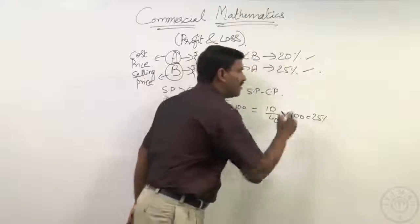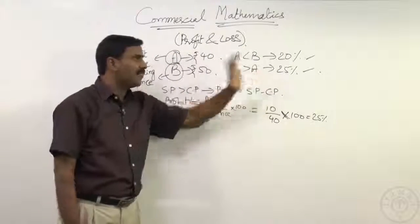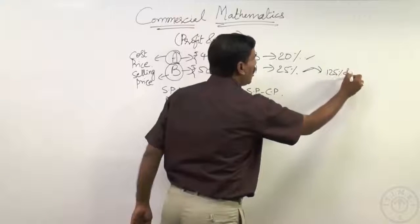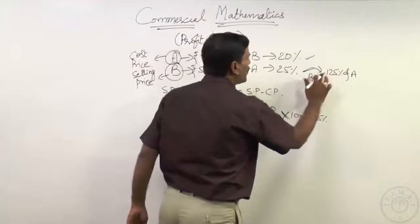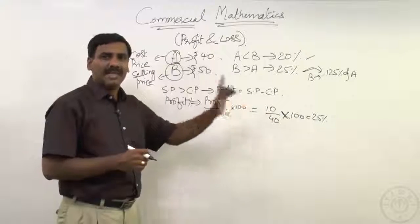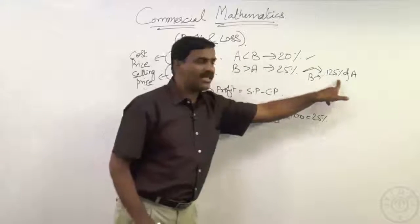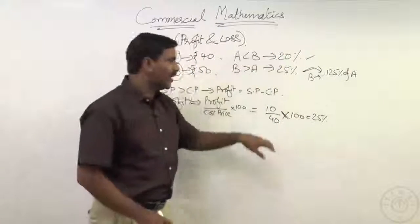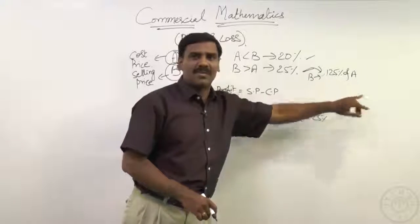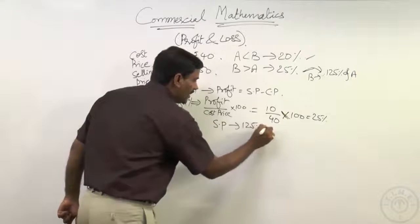So if there is a profit of 25 percentage, selling price is 125 percentage of cost price — just as B is 125 percentage of A from our earlier example. If we replace B with selling price and A with cost price, if there is a profit of 25 percentage, selling price is equal to 125 percentage of cost price.